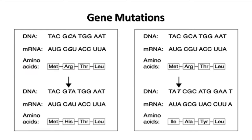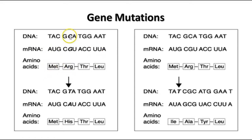Here we have a gene mutation example. You have the original DNA sequence TAC, GCA, TGG, AAT, with the corresponding mRNA sequence and amino acids coded for. But if we change this cytosine to a thymine — both are pyrimidines — that's going to change the messenger RNA codon from CGU to CAU, which codes for histidine rather than arginine. That can cause a huge difference in the way the protein turns out.